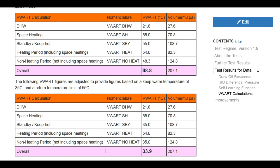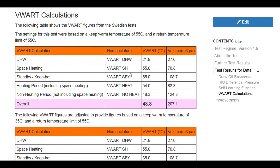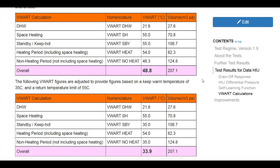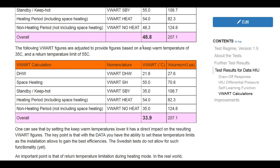Now, the first table here shows the test results with the keep warm temperature at 55 degrees C. So that's maintaining water in the heat exchanger at set point. Now, it's normal in installations to drop the keep warm set point to something in the region of 45 or 35 degrees C. Now, the effect of this can be shown in the second table here, where the VWART calculation would drop to in the region of 33, 34 degrees C.